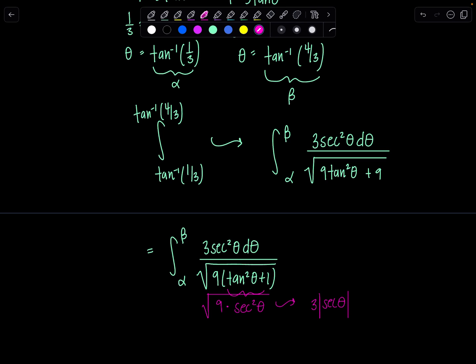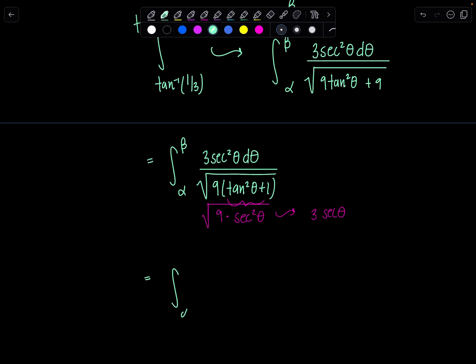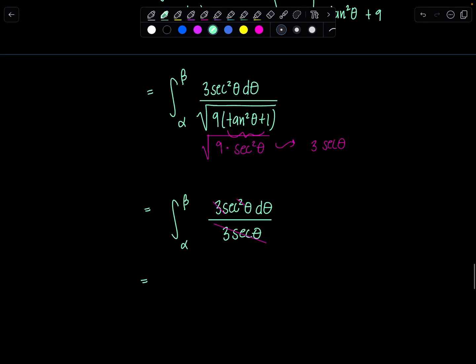But remember, when we do trig sub, we restrict where theta is. So we don't have to worry about the absolute value bars. We can just drop them, and that's what's in our denominator. So then now we've got alpha to beta 3 secant squared theta d theta over 3 secant theta. The whole denominator cancels. The 3's gone, and there's just one secant left now. So integral alpha to beta secant theta d theta. You remember antiderivative for secant theta? Natural log absolute value secant theta plus tan theta, and then this gets evaluated alpha to beta.